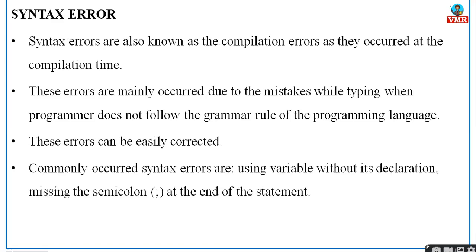These errors can be easily corrected. The commonly occurring syntax errors are missing semicolons and using a variable without declaration. These are the general mistakes a programmer will make. The reason they are easy to correct is that whenever you compile, the compiler gives you the line number, number of errors occurred, and which line number you are getting that error — everything in detail. So if you read the errors properly, you will be able to identify where the error occurred in your program.